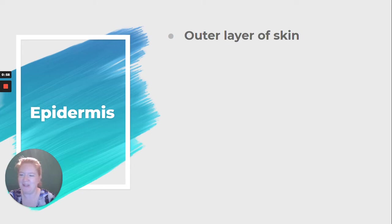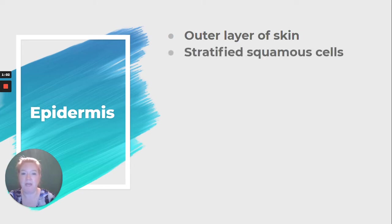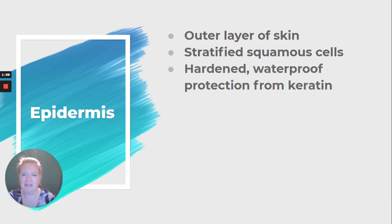The outer layer of skin — that's the epidermis. It is made of stratified squamous cells, those weird flat, fried-egg-looking cells. It is hardened, waterproof protection from keratin, so the outer layer of your skin is dead skin cells filled with keratin.